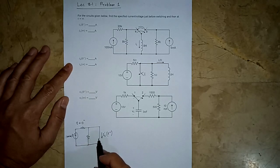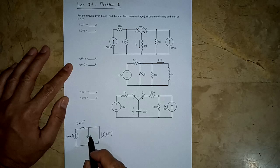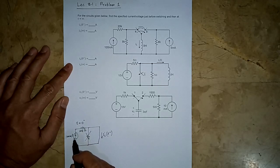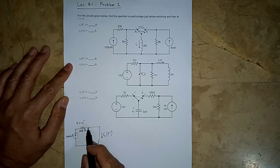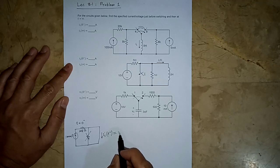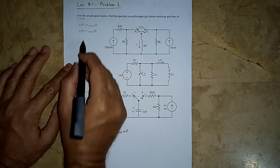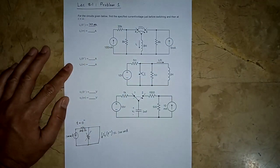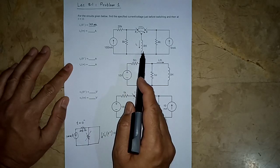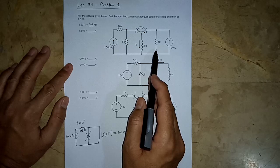In steady state, an inductor is replaced by a short circuit and a capacitor by an open circuit. The shorted resistor plays no role. The other resistor in series with the current source also plays no role. All the current from the source flows into the inductor node, so IL(0−) equals 100 milliamperes.